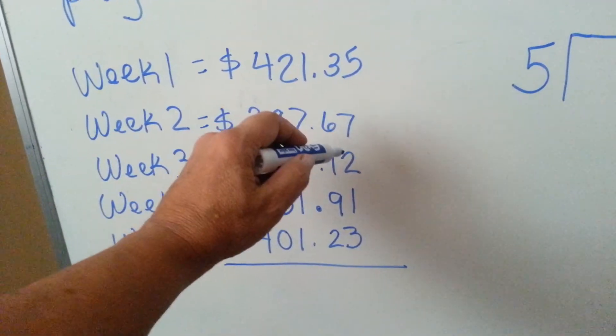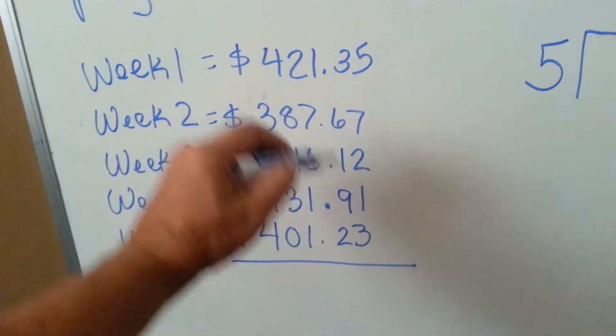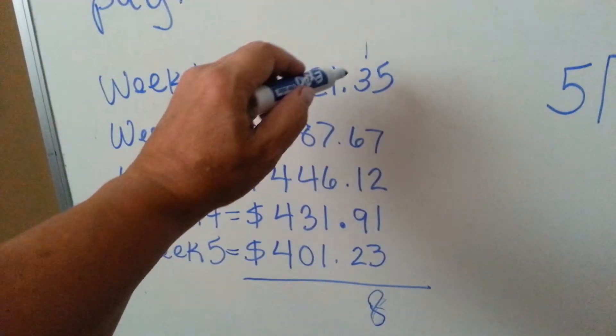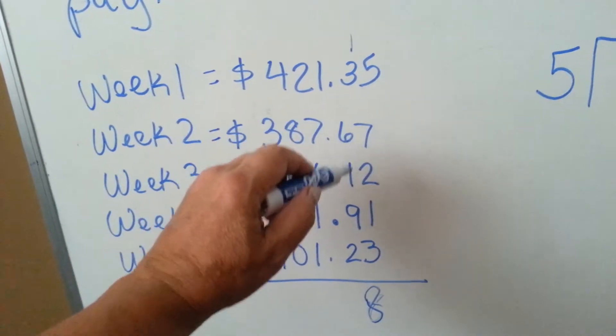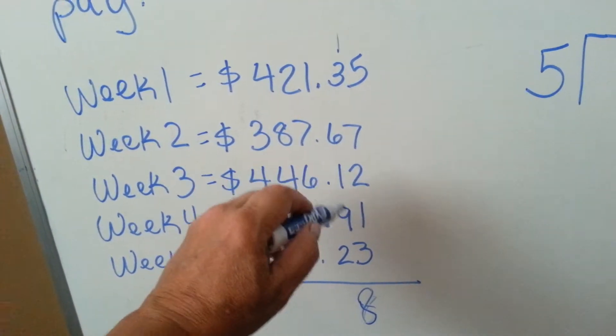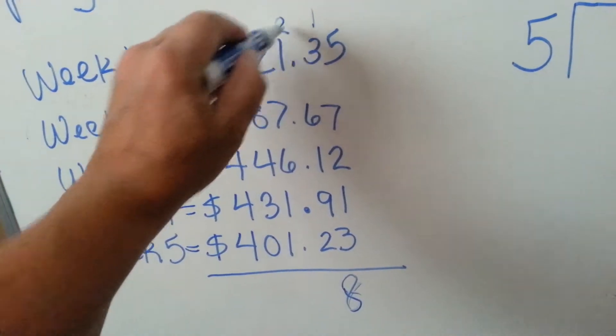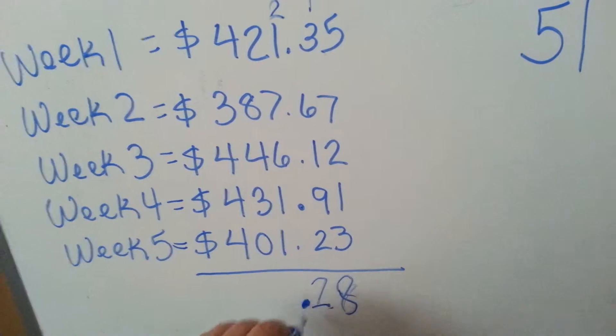5 and 7 is 12, 13, 14, 15, 16, 17, 18. We're going to carry the 1 and put the 8 down. 3 and 1 is 4, and 6 is 10. That makes another 10, so we got 20, 21, 22. We're going to carry the 2, put the 2 down, and remember our decimal point.